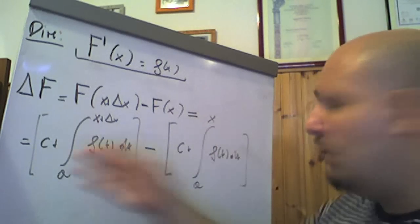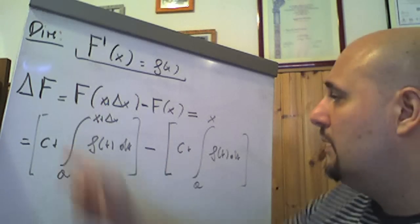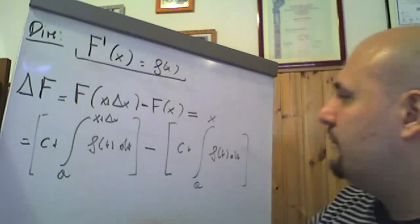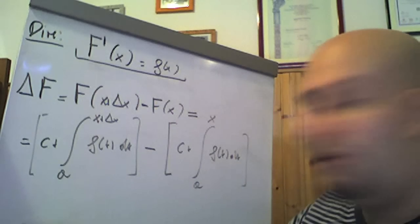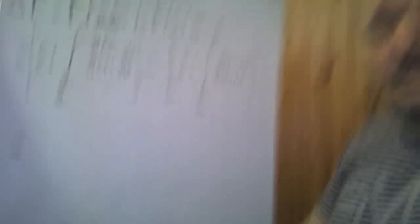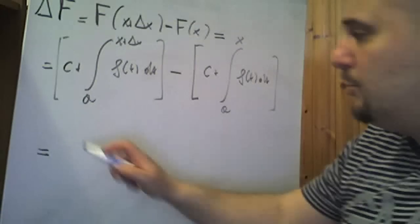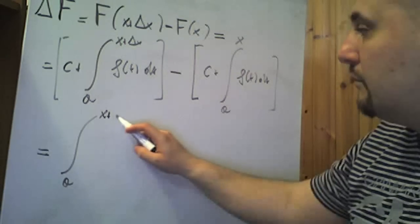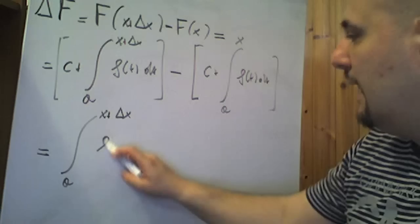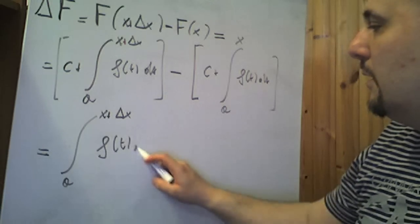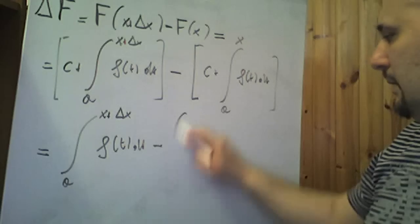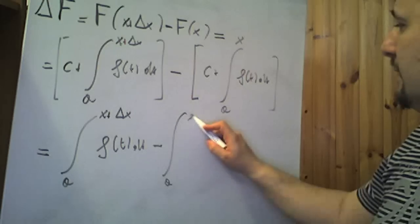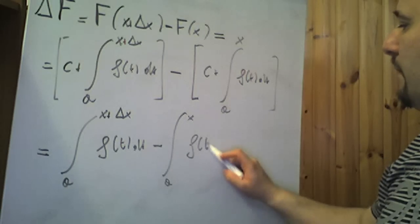Se adesso svolgiamo le due parentesi quadre, c e meno c si annullano. Quindi diventa: ΔF sarà uguale all'integrale tra a e x più Δx di f di t dt, meno l'integrale tra a e x di f di t dt.